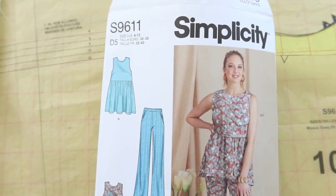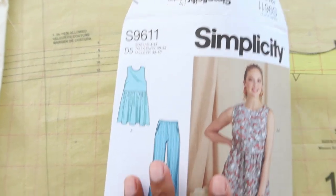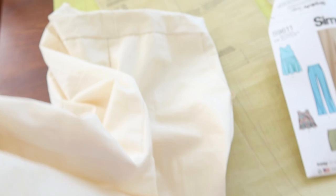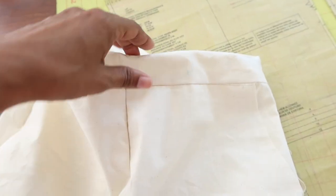I just finished making this pattern Simplicity 9611. This is rated as easy and I made it up in a muslin. I need to now go buy some fabric to make the real pants, but I did notice that I want to make a couple changes.